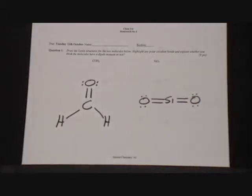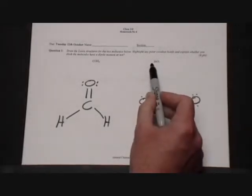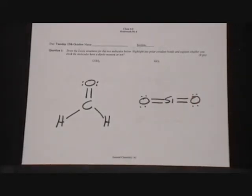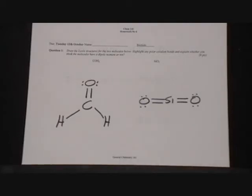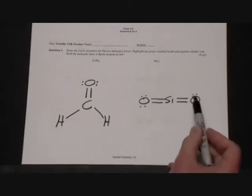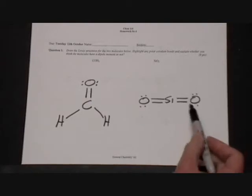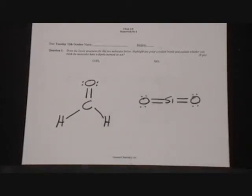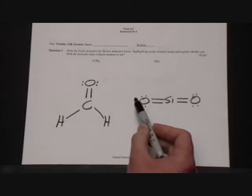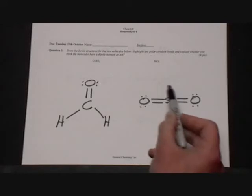For SiO₂, silicon dioxide, we get four electrons for the silicon and six electrons for each of the oxygens, giving a total of 16 electrons. We use silicon as the central atom because it needs four electrons to complete its shell, compared to just two for each oxygen. We draw in the lone pairs initially for the oxygens to complete their octets, then use a pair of electrons from each oxygen to form double bonds so that the octet of the silicon atom is complete.